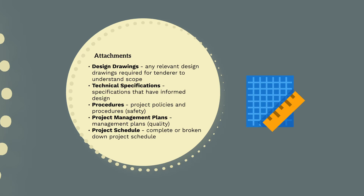The scope of works needs to reference all the key supporting documents that will help define what works the subcontractor is required to perform. This includes design drawings — any relevant drawings pertaining to the tenderer's scope — technical specifications detailing construction tolerances and requirements, procedures such as the safety management plans that detail what safety outcomes the contractor needs to achieve, and the project schedule defining the time outcomes the contractor needs to achieve.